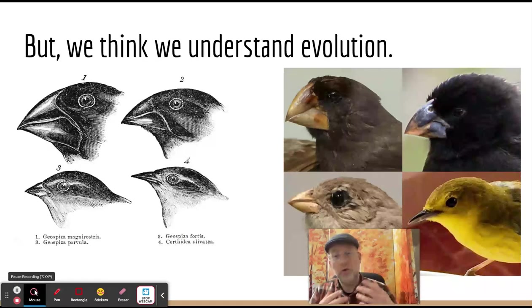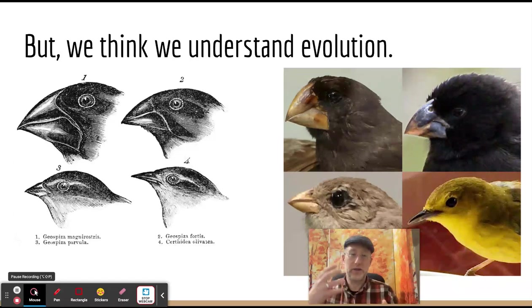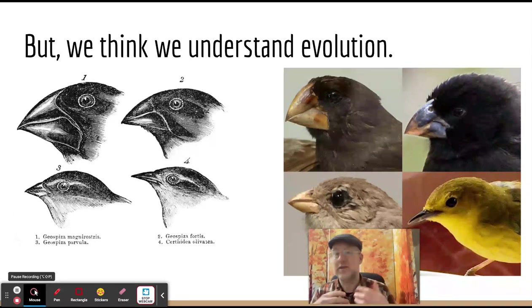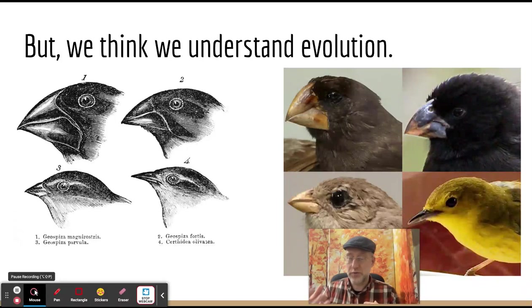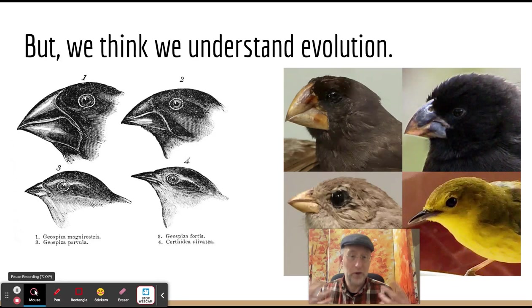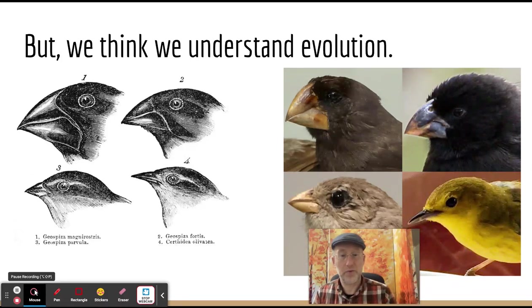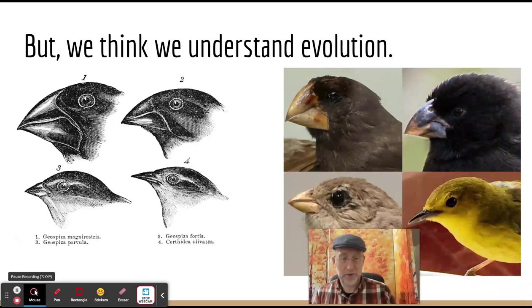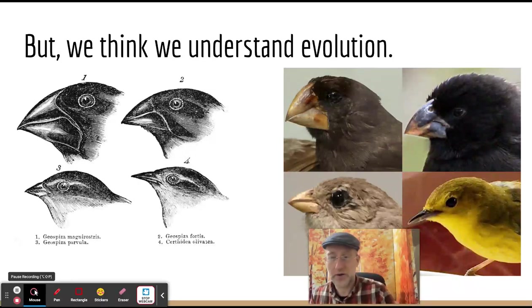While we don't think we understand all about cells, we do think we understand a lot about evolution. Basically, the finches have different beak types because it helps them eat different food more effectively. Those with different beak types didn't live as well or propagate or have babies as well as those with the beaks that actually helped eat the food they had available. So that's adaptation — adaptation is evolution. That's the model.